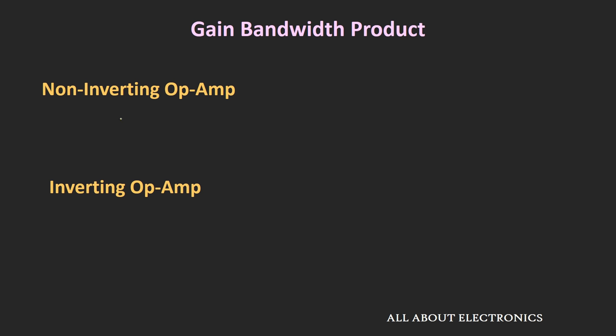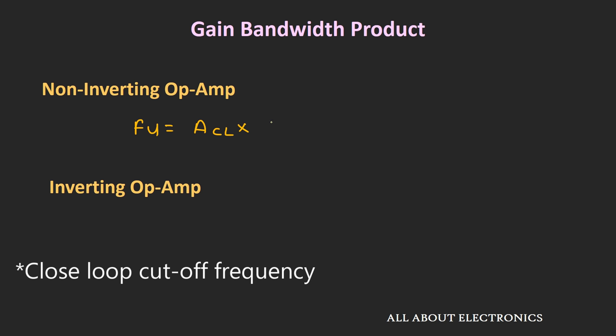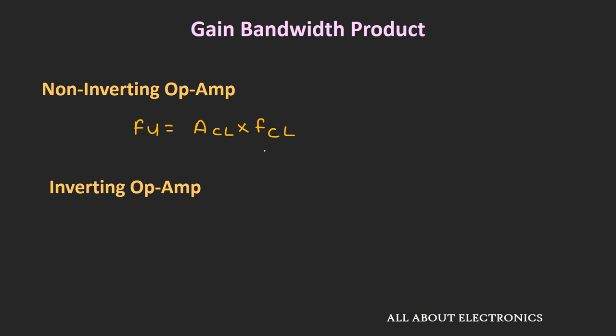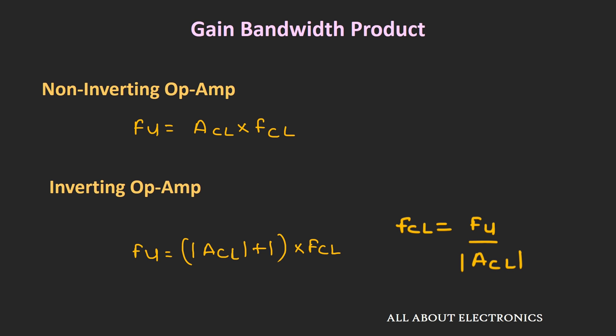This relation is particularly true when using the op-amp in a non-inverting configuration. For the non-inverting configuration, the unity gain frequency or gain bandwidth product equals the closed-loop gain multiplied by the cut-off frequency of the op-amp. For the inverting op-amp configuration, the gain bandwidth product equals the closed-loop gain plus 1 multiplied by the cut-off frequency. I will provide a separate note with the derivation of these equations in the description soon. Note that whenever the closed-loop gain is very low, the cut-off frequency for the inverting and non-inverting configurations will be different.